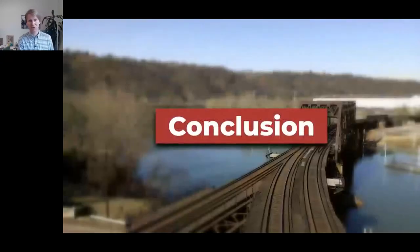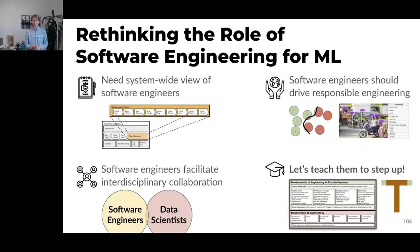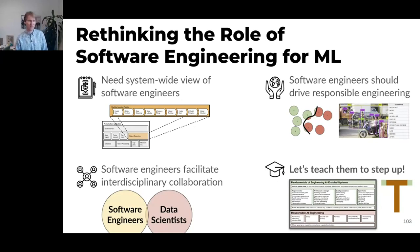In conclusion, we should elevate software engineers and think about the entire system. Machine learning is a component in a system — we need the system-wide view. Software engineers need to drive responsible engineering, and we need to facilitate collaboration. The way to do this is through education. I'm happy to take questions and if you see me in person next week, please approach me — I'm happy to continue talking about this.